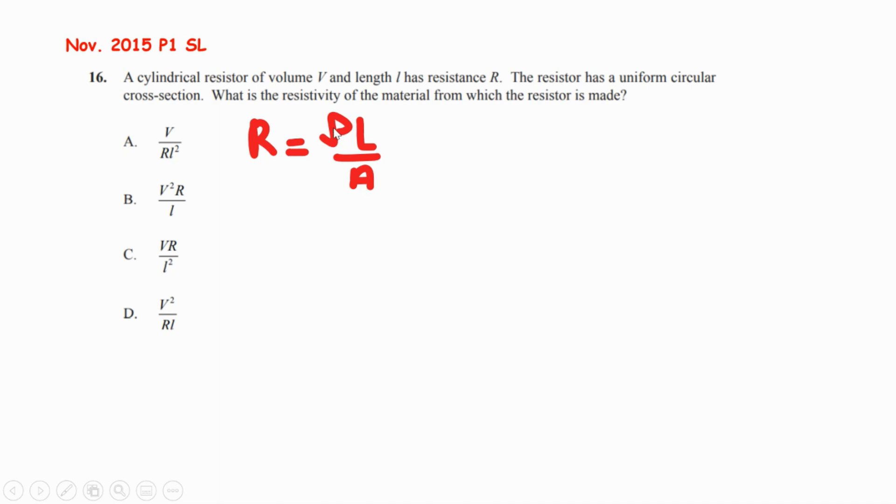We have to rearrange the formula to keep the rho resistivity on the left side. Rho equals R times A, the cross multiplication, divided by the length.